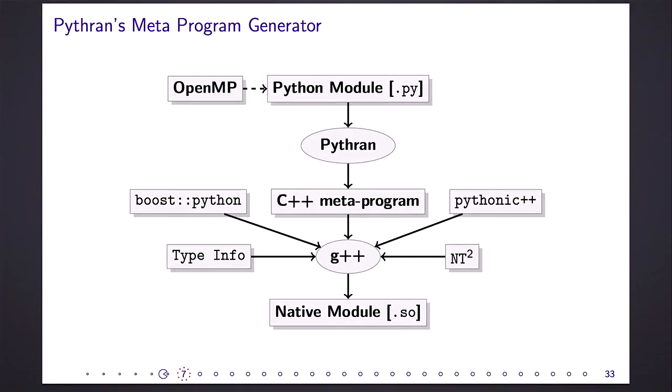So how it works, I will go into a little bit more details later. We take a Python module, we take eventually some OpenMP annotation. Pythran processes this Python module using the Python AST module. So Pythran is fully written in Python. And it generates a C++ meta program. I will explain a bit later what I mean. And then we feed this program to the compiler, the host compiler, G++ or Clang. And with a bunch of libraries, Boost Python of course, but also Pythonic++, which is our own runtime library, and some other libraries like NT2, we generate a native module that can be imported and used as any Python module.